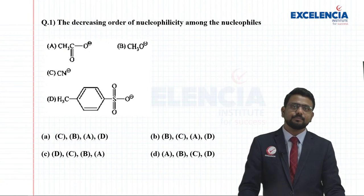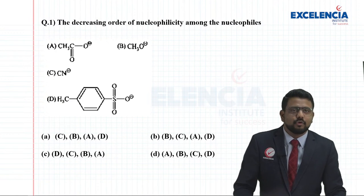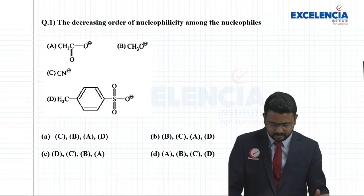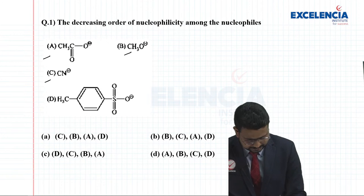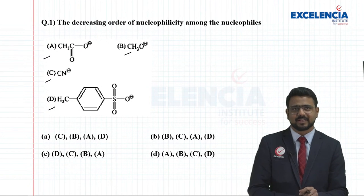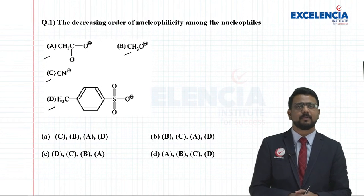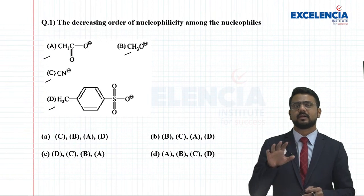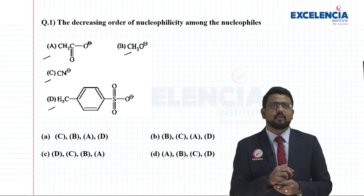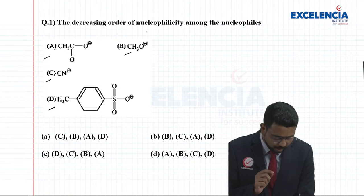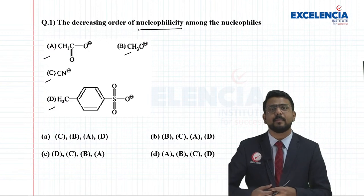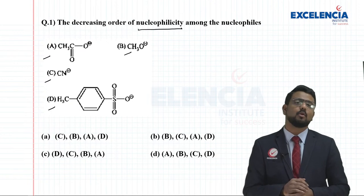The very first question is the decreasing order of nucleophilicity among the nucleophiles. You have been given four different nucleophiles: A, B, C, and D. What they're asking is to write the decreasing order of nucleophilicity — starting with the one having the highest nucleophilic power toward the least. Nucleophilicity refers to the ease with which they are capable of donating the lone pairs of electrons.